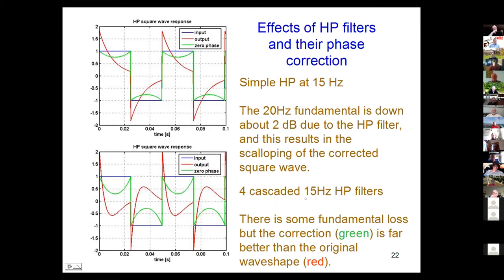What happens if we have four cascaded 15 hertz filters? The output will look like the red curve there, and it's awful. It doesn't look very good at all. The zero phase one has a bit more loss of fundamental. There'll be a little bit of loss at these low frequencies. But again, it's very much better. The phase correction really does make a big difference if we can do it.